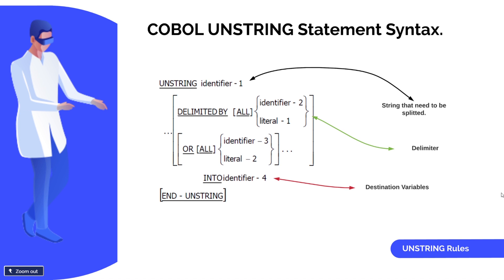The last important parameter is INTO, where you pass the fields in which you want to store the split data. END-UNSTRING is an explicit scope terminator — if you want to use it you can, otherwise you can use a dot or full stop to terminate the scope. Now let's move on to the unstring rules.